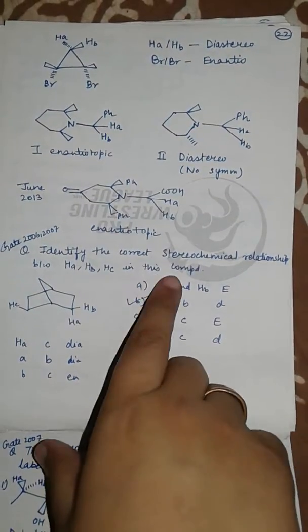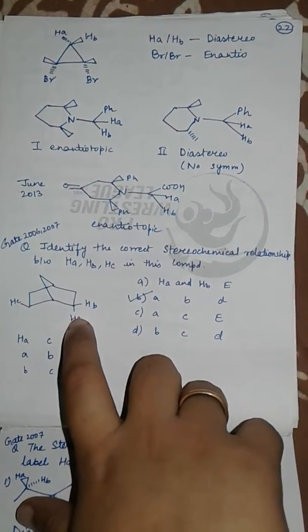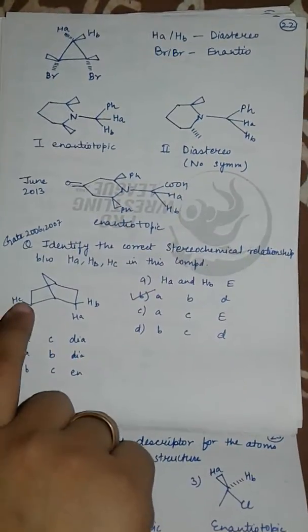So H_A and H_B are diastereotopic because there is no symmetry in this compound.